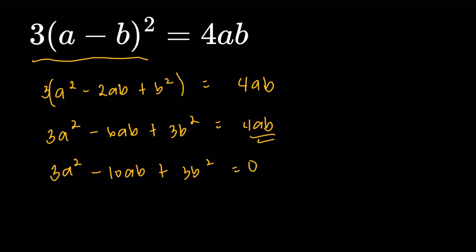3a squared minus 10ab plus 3b squared is equal to 0. And luckily for us, this is actually factorable. So we could factor it as 3a minus b times a minus 3b like so. And we know that since the product of these two equals 0, so we should have 3a minus b to be equal to 0 or a minus 3b being equal to 0.